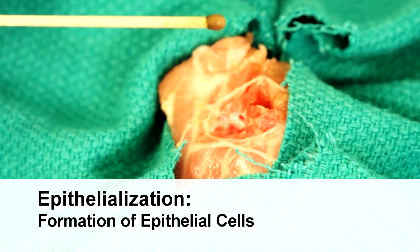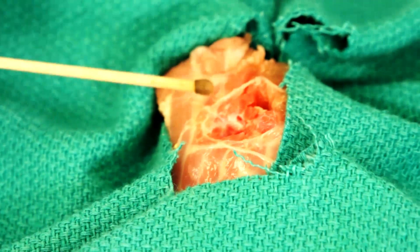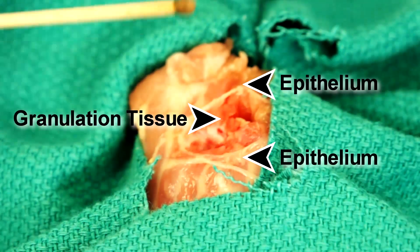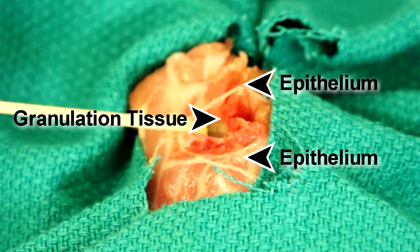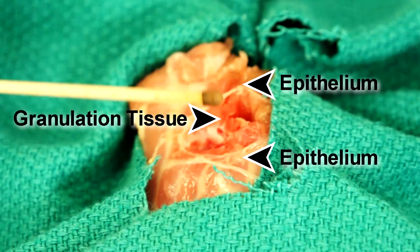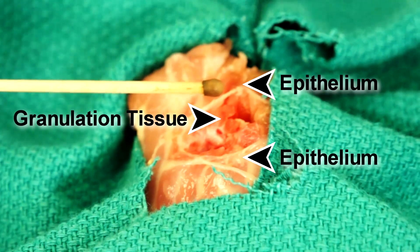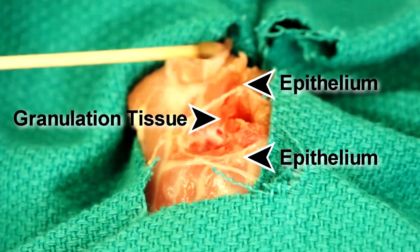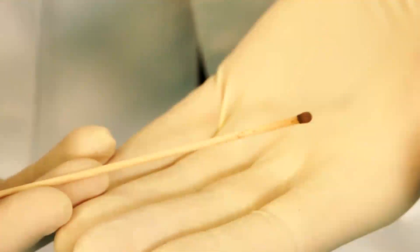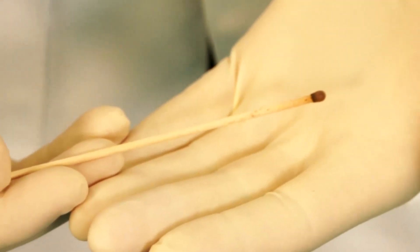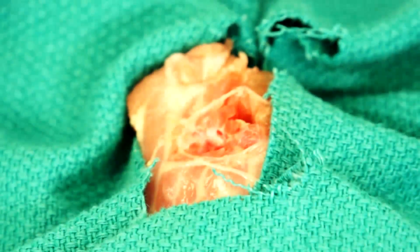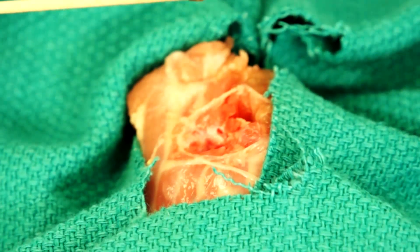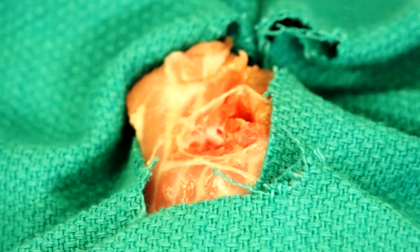For epithelialization to occur, the epithelial cells from one side of the wound must have contact with the other side of the wound. If granulation tissue is mounded between these two edges of the epithelial cells, they will not cross and contact, achieving closure of the wound. Silver nitrate, as seen on the end of this applicator, is commonly used to destroy a portion of the hypergranulation and allow successful wound healing and closure.